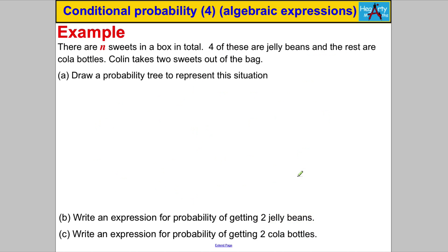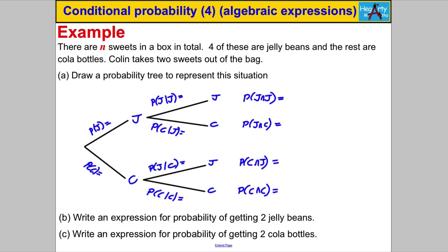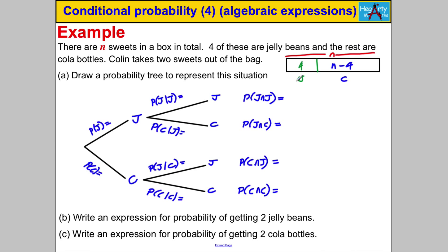Let's try one more question of this nature — pause the video and have a go. This question is slightly different. It says there are n sweets in total in the box. Four of them are jelly beans, and the rest are cola bottles, so the expression for cola bottles is n subtract 4.